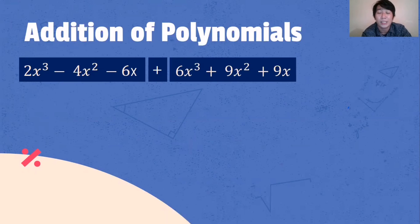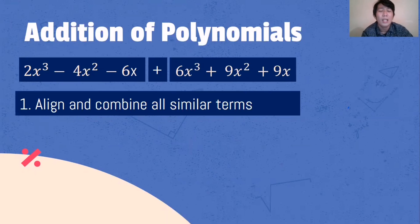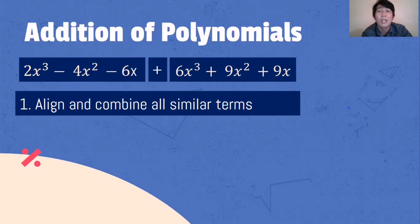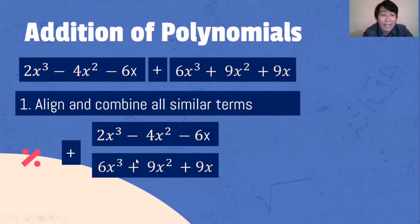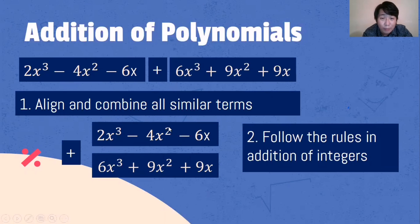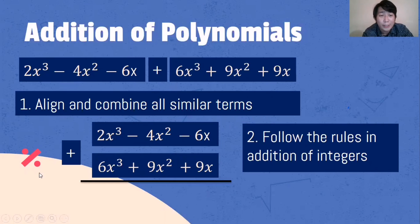What is the process in adding polynomials? Number one: align and combine all similar terms. We need to align and combine all similar terms — we will be looking for terms which have the same variable and same exponent. For example, we will be aligning x cubed with x cubed, then x squared with x squared, and x with x. Then we will be following the rules in addition of integers. What is 2x cubed plus 6x cubed?